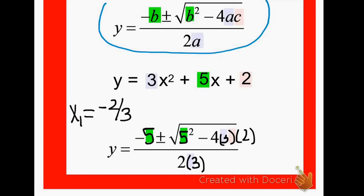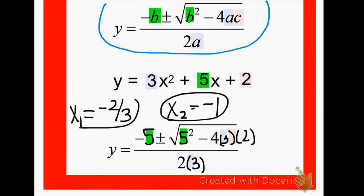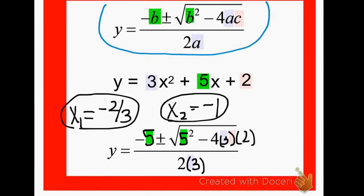The easiest way to find your other solution is to hit the back arrow and change the plus sign in front of the square root to a minus. Hit delete for plus, then hit minus and hit equals again. That's going to tell you x2 equals negative 1. So my solutions are negative two-thirds and negative 1.